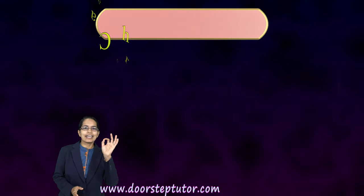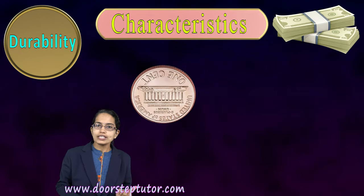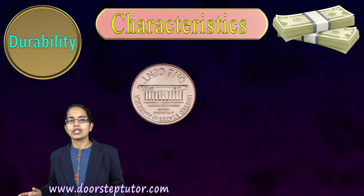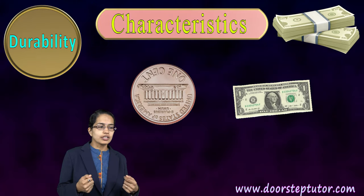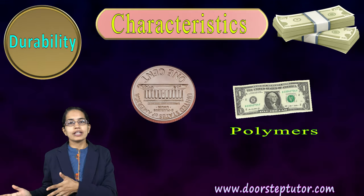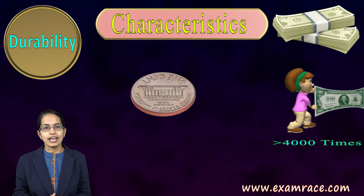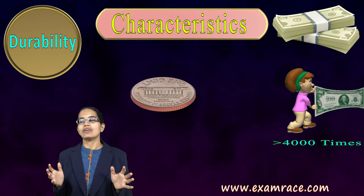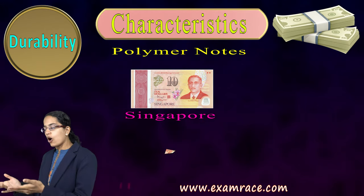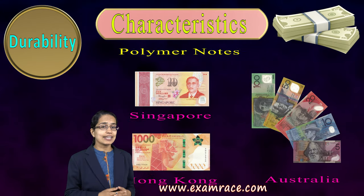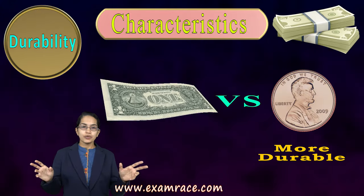What are some basic characteristics of money? First is durability — coins brought into the market today would last for at least 20 to 30 years, and similarly with notes. Bank notes are usually made of polymers rather than paper. A US dollar can be bent forward and backward more than 4000 times and still not be damaged. Similar polymer notes have also been seen in Singapore, Hong Kong, Australia, and Brunei. Coins are generally even more durable than notes.